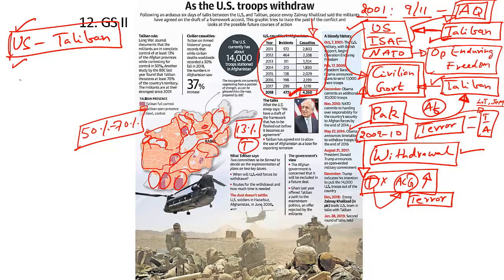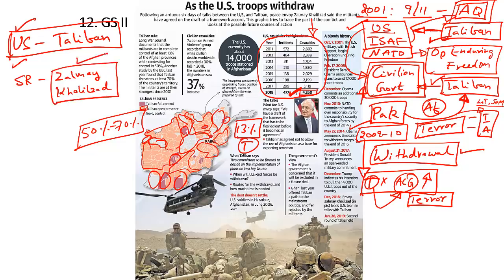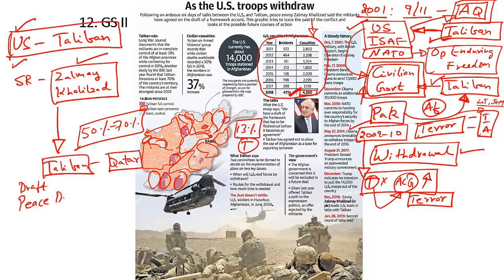To accelerate the withdrawal of American forces from Afghanistan, the Trump government appointed a special representative, Mr. Zalmay Khalilzad, to lead American negotiations with the Taliban. Over the last few weeks, the US representative has been negotiating with Taliban leaders at Qatar, and finally the two sides have confirmed the emergence of a draft peace deal.